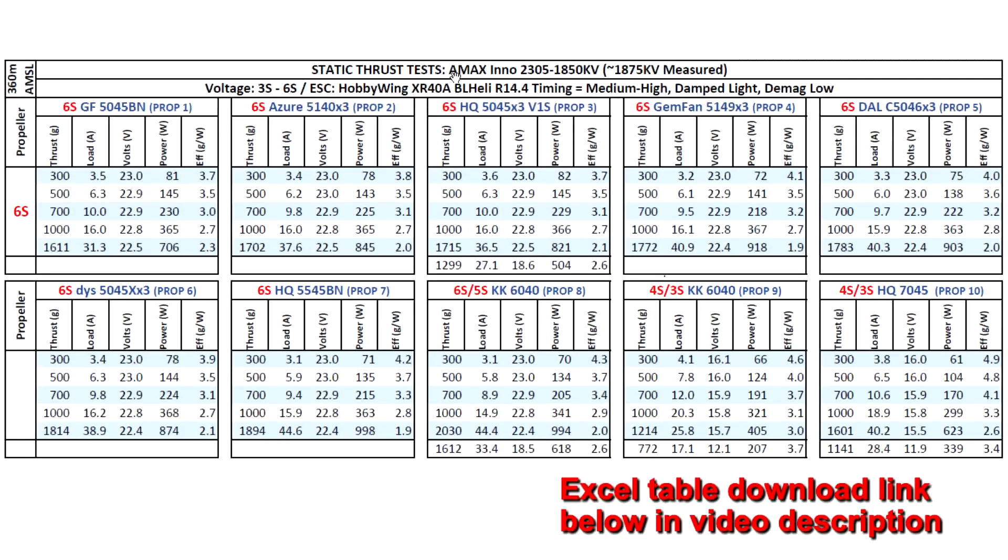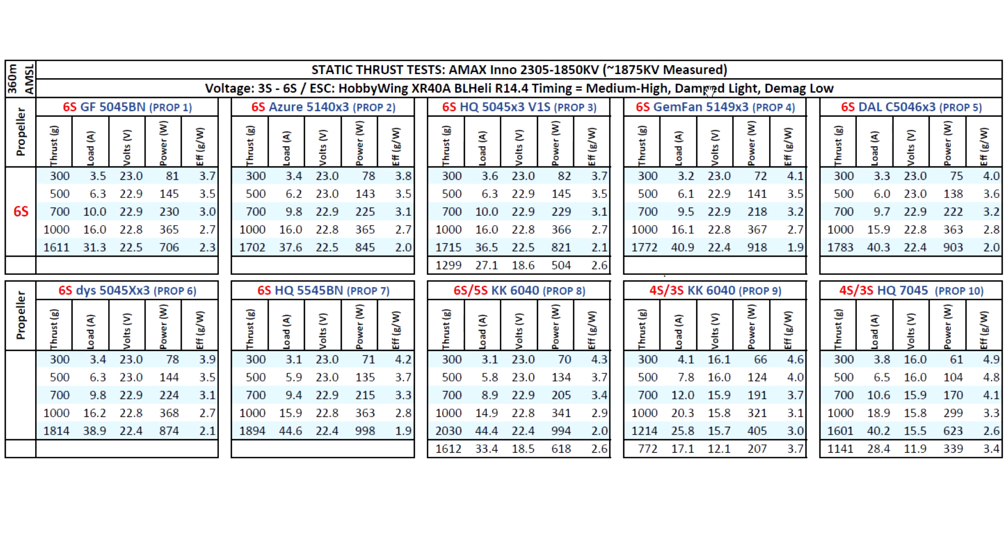Just a quick summary on this AMAX Inno 2305 1850 KV motor, which came in at very close at 1875 KV as measured by the thrust stand. This size motor hasn't been too common, 2305. Most motors these days have been 2306 and larger. It was interesting to run it and see what it would do. A very well made motor, looks pretty good quality. As the results show, it's actually performing pretty well. If we compare these results to some of the 2306 motors I've tested recently, it actually comes pretty close within this KV value and 2306 size. Kind of surprising to see the 2305 come very close to the 2306s.